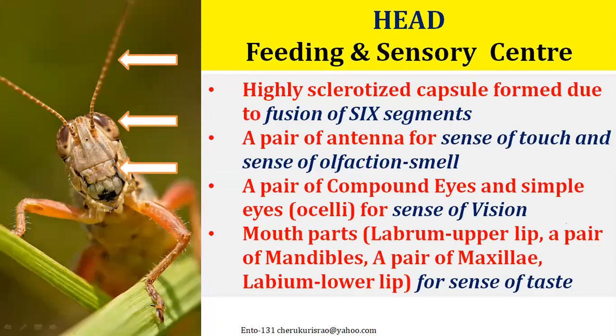The first tagmata is the head. The head contains compound eyes. You can see a wonderful picture of a grasshopper, and when you look at the close view of the grasshopper head, it looks like a demon. You can see two big compound eyes, two antennae, and some mouth parts. That is the reason the head is called the feeding and sensory center in all insects.